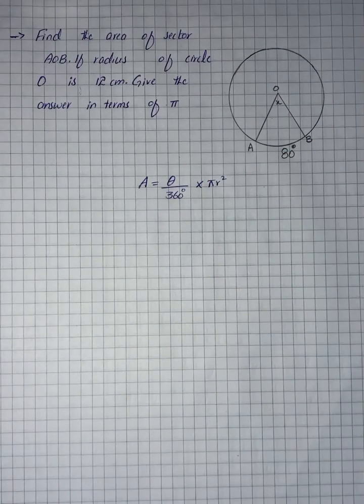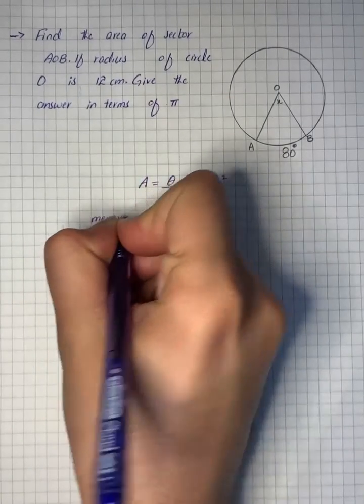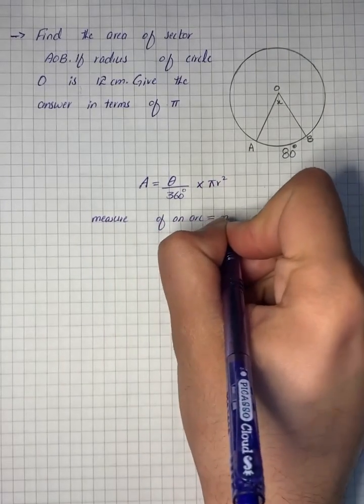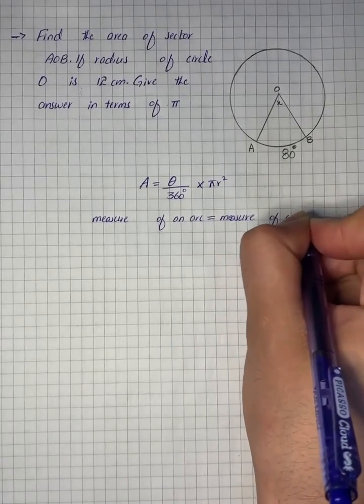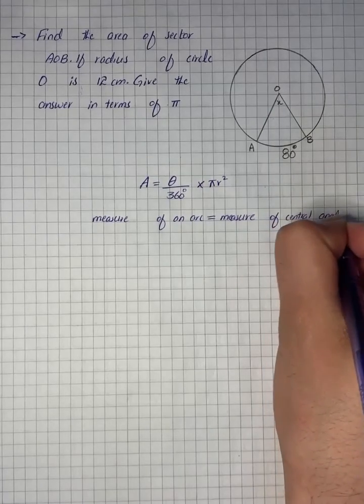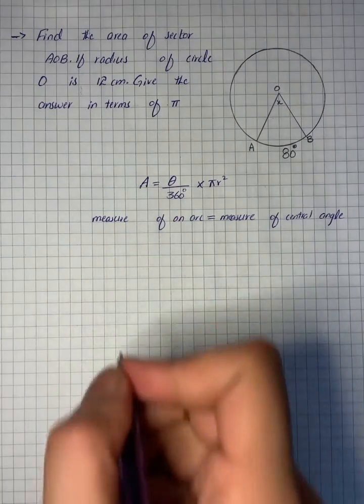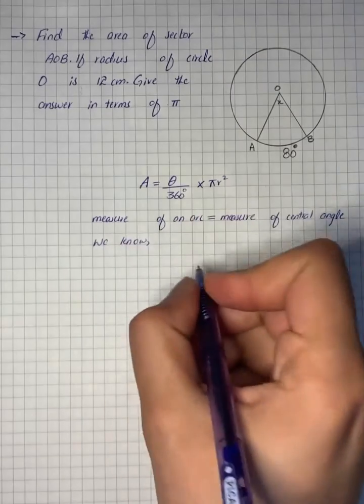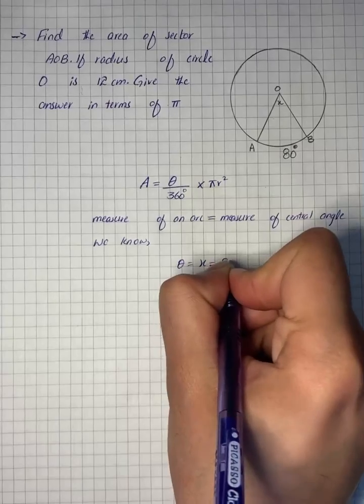Since the measure of an arc is equal to the measure of its central angle, we know that theta is equal to x, that is equal to 80 degrees.